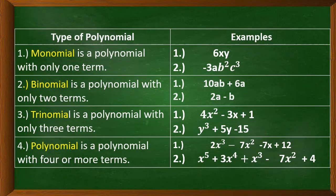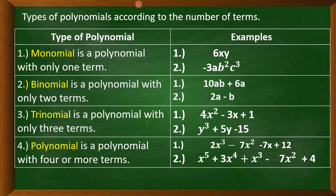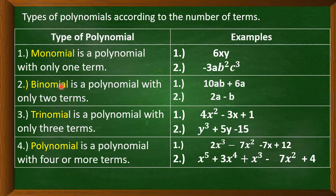Next, we will deal with types of polynomials according to the number of terms. First, monomial — from the word 'mono,' meaning only 1. A monomial is a polynomial with only 1 term, such as 6xy, negative 3ab², or c³. Another type is binomial — from the word 'bi,' meaning 2. It consists of 2 terms, for example 10ab plus 6a, or 2a minus b.